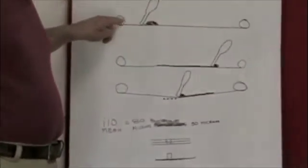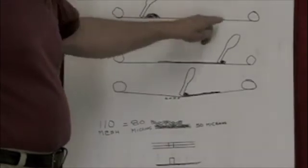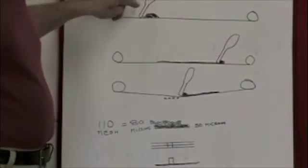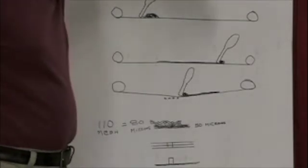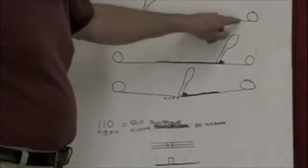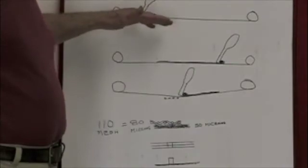The first picture here, we have a frame with mesh in the frame. There's the squeegee and there's a pile of ink. We're going to pull that squeegee along the screen. We notice that the mesh is straight, so the mesh is not touching the garment yet.